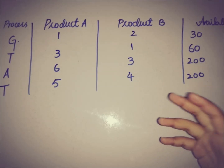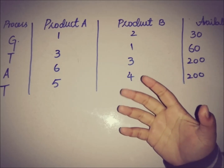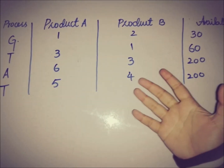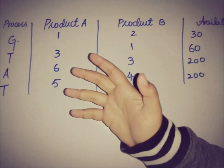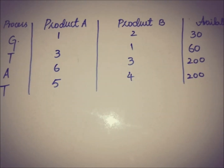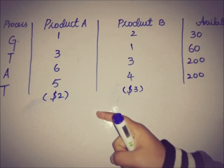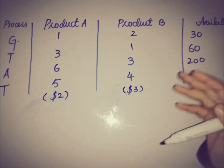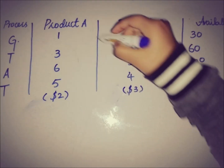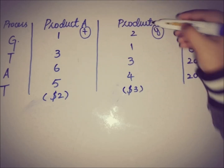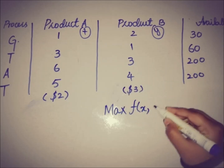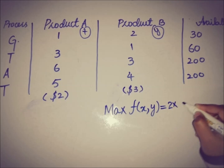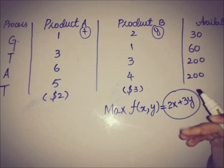Now we are going to model this problem. The objective is to maximize profit. We can maximize profit by maximizing production of both products, given their profit rates — Product A at 2 and Product B at 3. Let's express Product A as x and Product B as y. The objective function we need to maximize is f(x, y) = 2x + 3y.